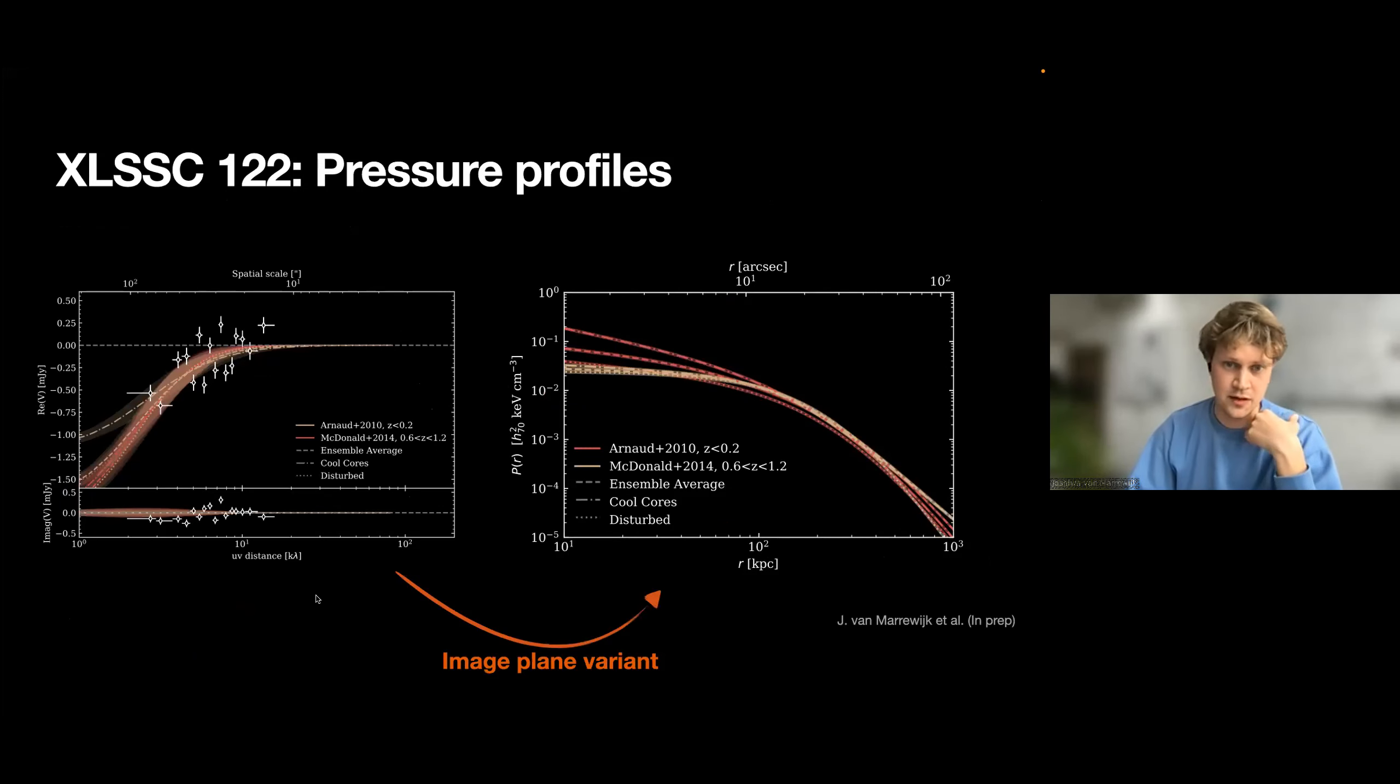So what this means—you can also see this in the image plane—is that it becomes very hard to classify high-redshift galaxy clusters, just because you miss the information at the smallest baselines or the larger scales. And in the image plane, when we go back to the pressure profiles, you can see if you don't know the amplitude, all these lines, except for this local cool core profile, start to overlap. So you cannot distinguish between the different classifications, which is a bummer.